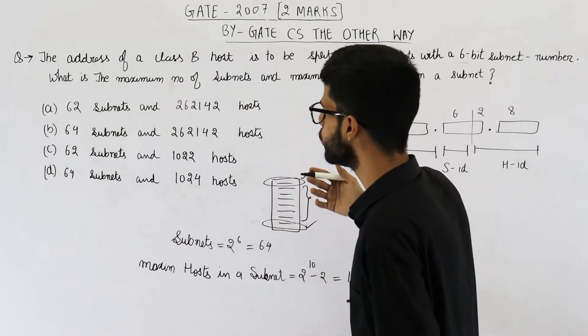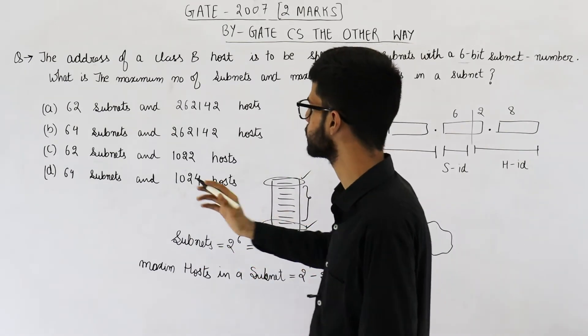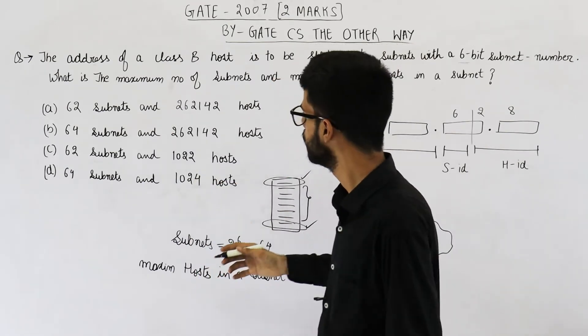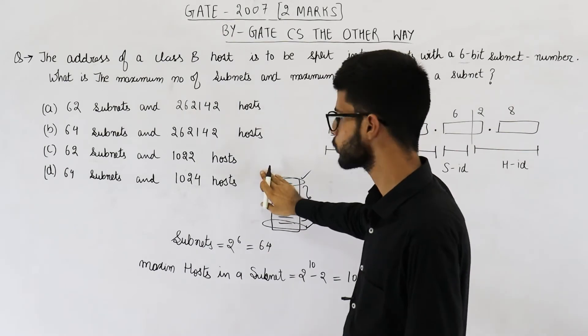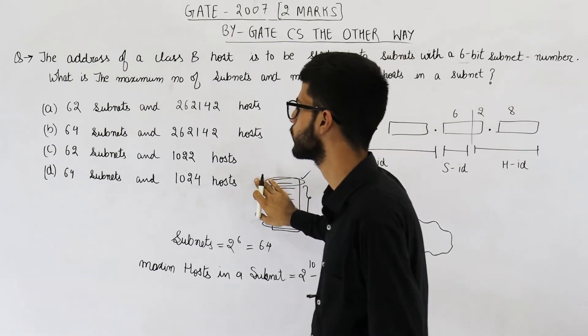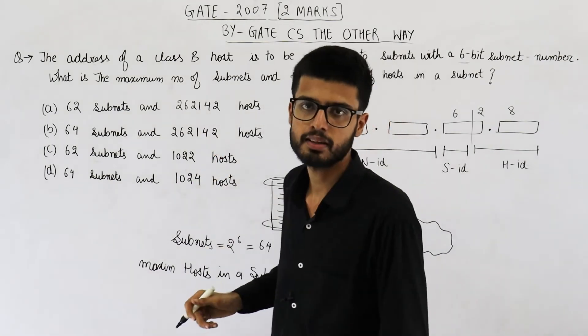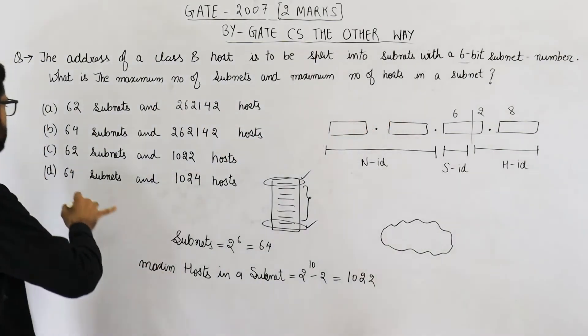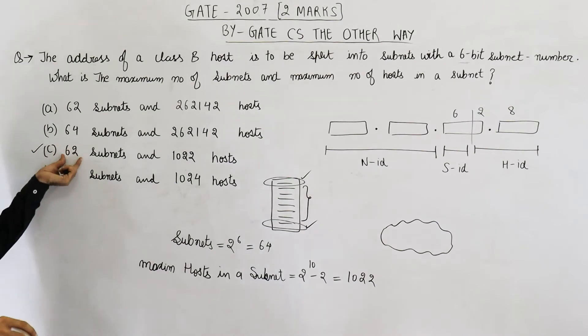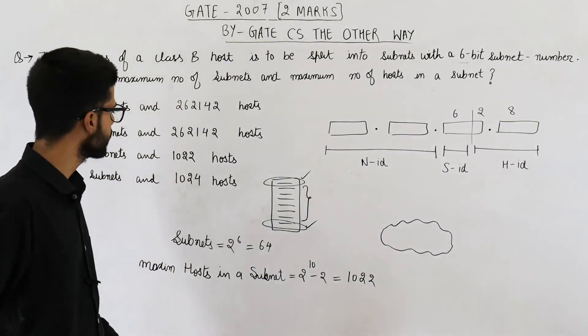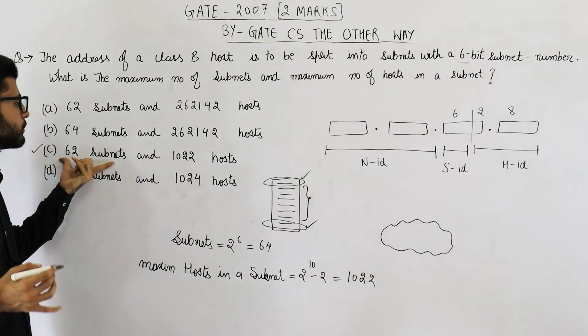Now you can see, we don't have any option that says 64 and 1022. So is this question incorrect? No, it is not incorrect. This answer as well as this question both are correct. Actually answer is option C, 62 and 1022.